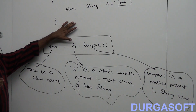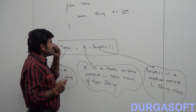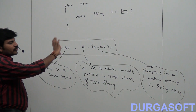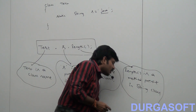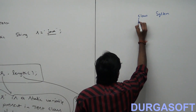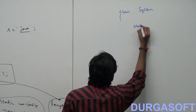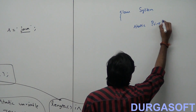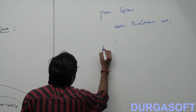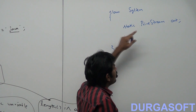The same thing, if you understand this terminology, nothing is different in System.out.println. S is a static variable of String type, Test is a class name, and length is a method present in String class. Now I want to create one replica for this. There is one class named System. System is a class present in the java.lang package. There is one static variable of type PrintStream.